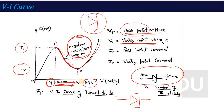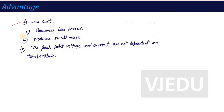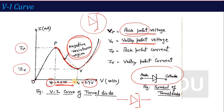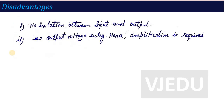The advantages of tunnel diode include: low cost, low power consumption, and small noise generation. The main advantage is that the peak point voltage and current are not dependent on temperature — the values from which tunneling action decreases are temperature-independent. Disadvantages include: no isolation between input and output — input and output are combined — and low output voltage swing, which means amplification is required.